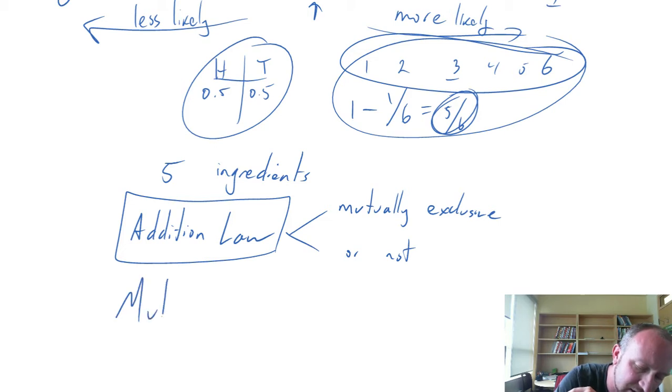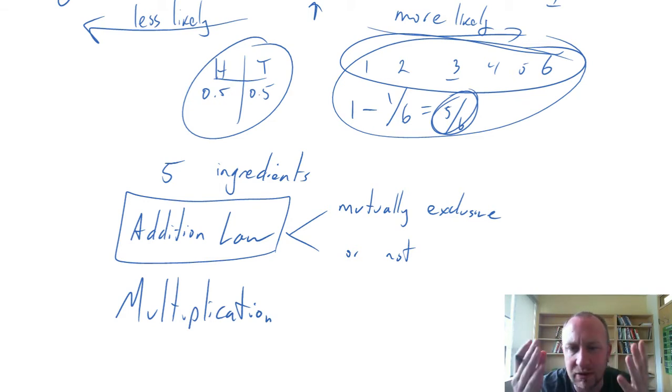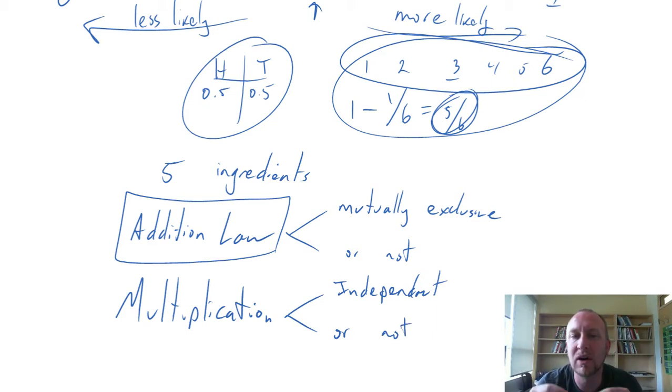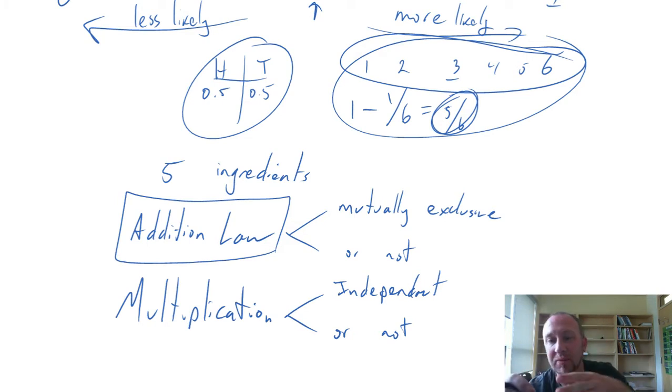Similarly, we'll look at the multiplication law. We understand multiplying things together, but in dealing with probabilities, the way we do this depends on whether or not events are independent or not. Does one event occurring have any impact on the probability of something else occurring?